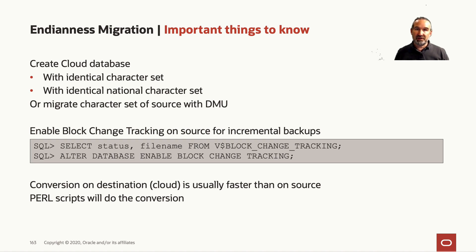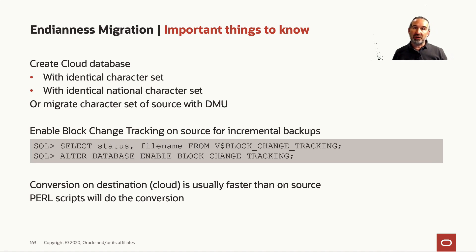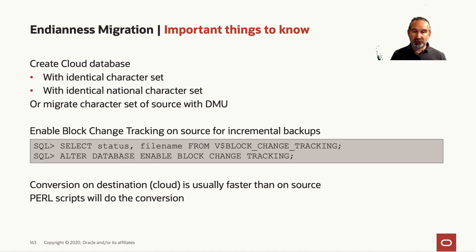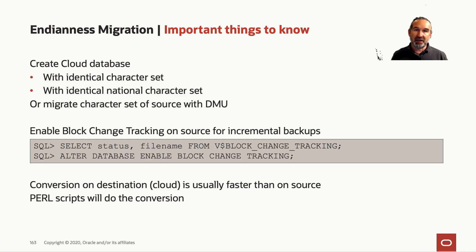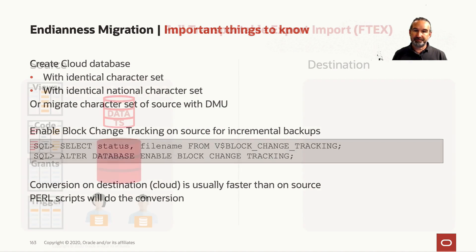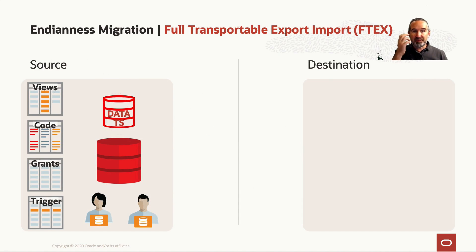Conversions of the files should typically be done on the cloud platform, because that is most likely much faster than on the source. The Perl scripts will do the conversion, and it depends on how you set your staging location. If you set it to object storage in the cloud, you can convert there, which makes it much faster. Now, let's look at how full transportable export import works at a basic level.